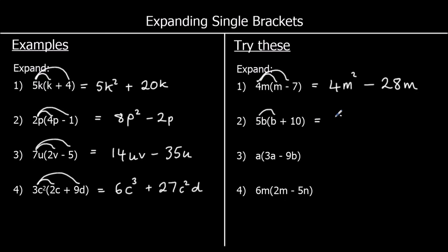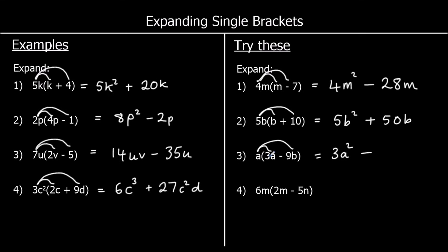5b times b is 5b². And 5b times 10 is 50b. The third one: a times 3a is 3a². A positive times a negative is negative. And a times 9b — so a times 9 times b — we write the number on the front, then ab. So 9ab.